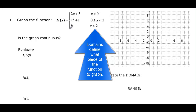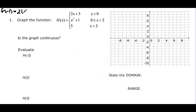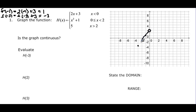Let's graph the next function. We have 2x plus 3 when x is less than 0. Trying f(−1): 2 times negative 1 plus 3 equals 1, so (−1, 1) is on the graph. Trying f(−3): negative 6 plus 3 equals negative 3, so (−3, −3) is on the graph. At x equals 0, 2 times 0 plus 3 equals 3, so (0, 3) is an open circle since x less than 0 doesn't include 0. Then we put an arrow because it continues forever.